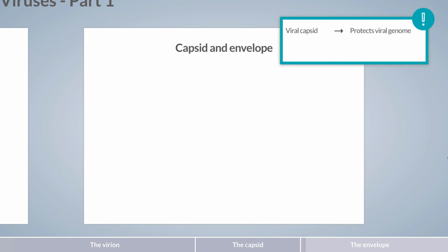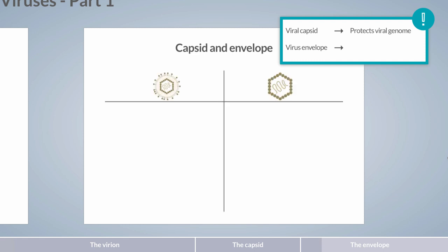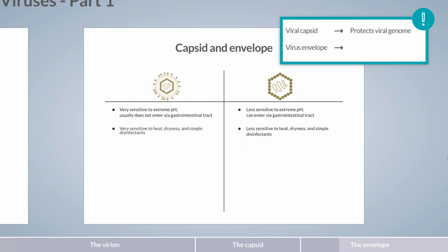Contrary to what one would expect, an envelope increases viral sensitivity to physical influencing factors as biological membranes are relatively fragile structures. Consequently, enveloped viruses can't survive the extreme acid of the stomach and don't usually enter through the gastrointestinal tract in the host. Enveloped viruses are also more sensitive to heat, dryness, and disinfectants such as ethanol or propanol, making them an easy target of hygienic measures.